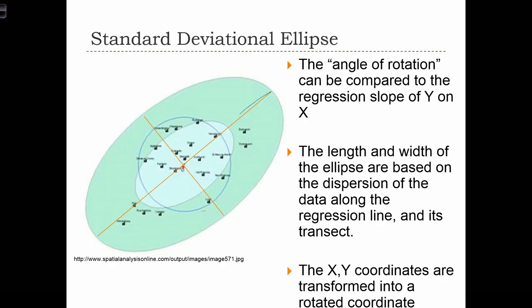The standard deviational ellipse is the anisotropic analog to the standard distance circle. In this data set, we have a point distribution.